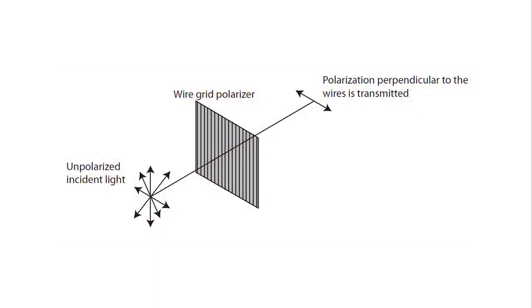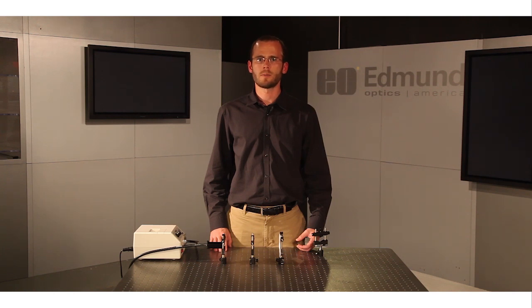Wire grid polarizers feature an array of microscopic wires on a glass substrate, which selectively transmits p polarized light and reflects s polarized light. Because of the mechanical nature, wire grid polarizers feature a wavelength band that is limited only by the transmission of the substrate, making them ideal for broadband applications.